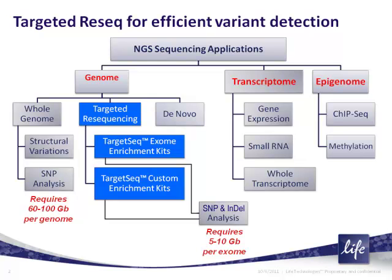Whole genome sequencing requires on the order of 60 to 100 gigabases of sequencing per genome. To address this challenge, various workflows have been developed that target subsets of the genome carrying the most important functional portions — namely the protein-coding sequences. That ensemble of genomic regions is commonly referred to as the exome, or the collection of all exons within the genome.